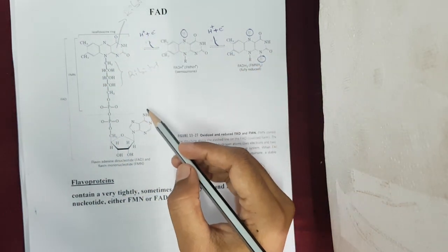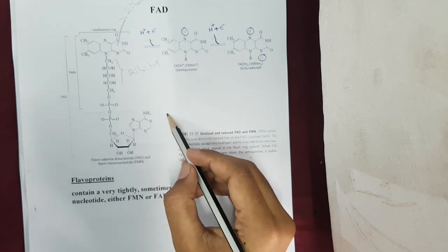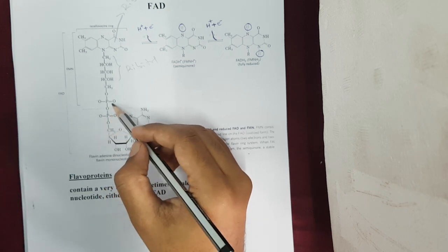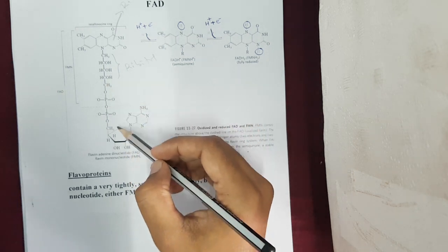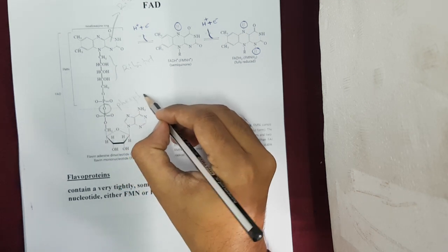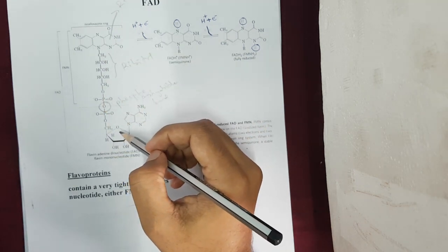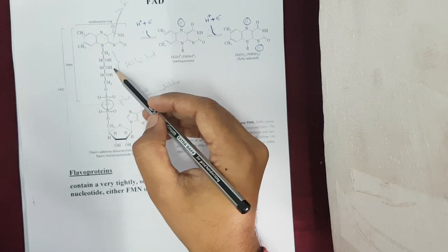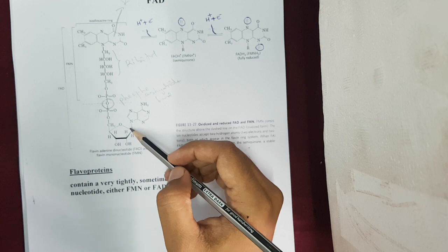Some enzymes have FMN as their cofactor. In the case of FAD, a second nucleotide — containing adenine attached to a ribose sugar, in turn attached to a phosphate group — is attached to the FMN. These two nucleotides are linked to one another with the help of a pyrophosphoanhydride bond, forming a dinucleotide. This entire structure is called FAD — flavin adenine dinucleotide.